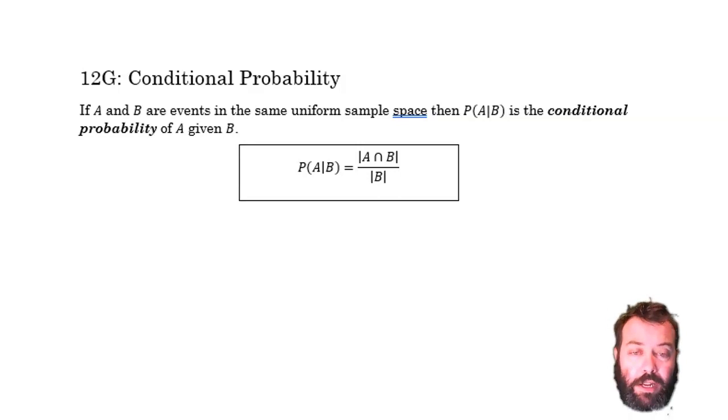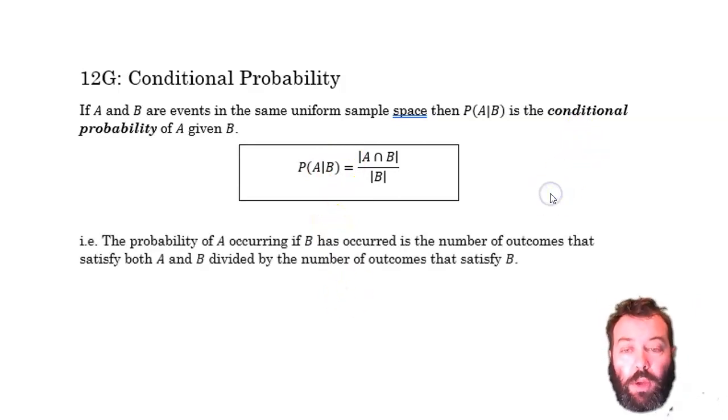We can calculate it this way here. The probability of A if B, or the conditional probability of A given B, but I prefer to say if B, is the intersection of A and B over the size of B. Another way of saying that is the probability of A occurring if B has occurred is the number of outcomes that satisfy both of those events, divided by the number of outcomes that satisfy B.